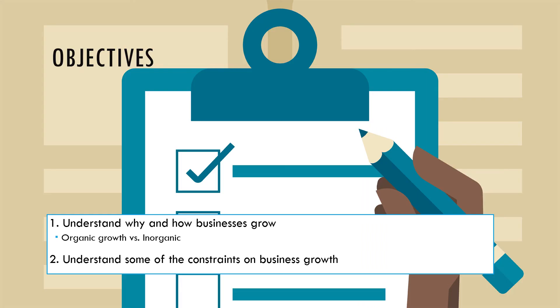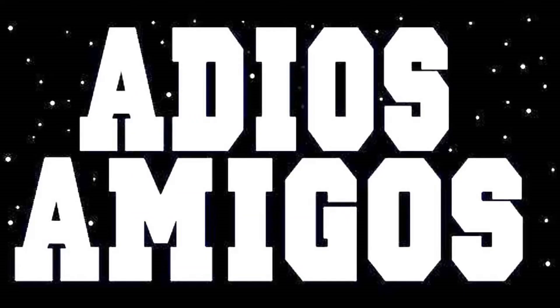In this video we've looked at why and how businesses grow, and just then we looked at some of the constraints — reasons why businesses can't grow or limits to their growth. That's it — thank you for listening.